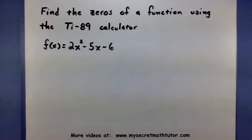Welcome! Today we are going to find the zeros of a quadratic function using our TI-89 calculator. For this example, the function I'm going to use is 2x squared minus 5x minus 6.